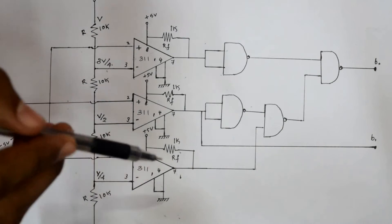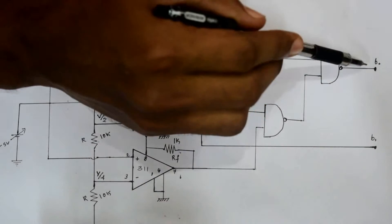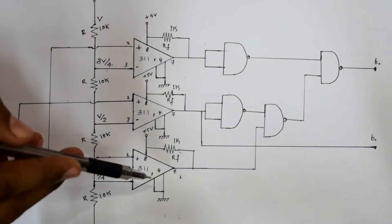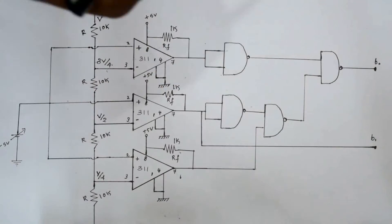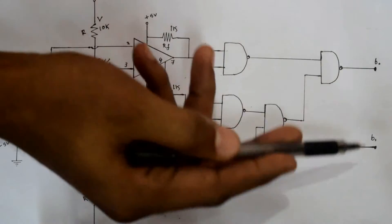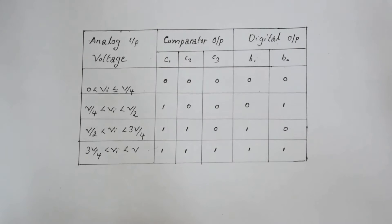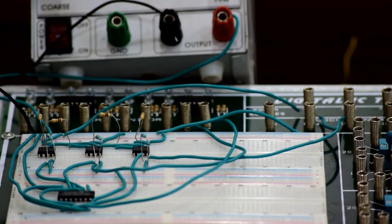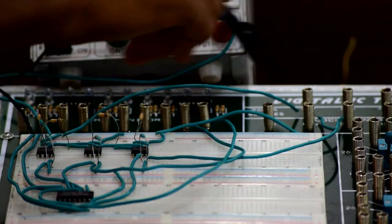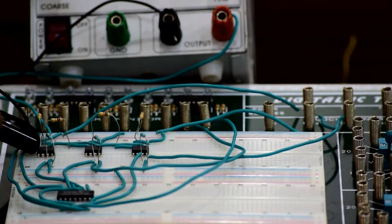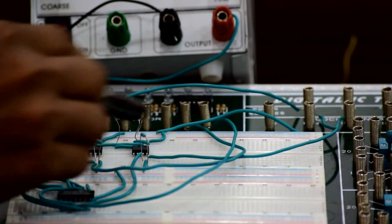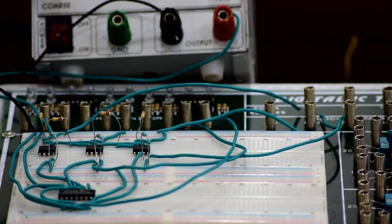The truth table for this experiment shows that the variation in the input can be recorded into digital with the help of this truth table. Now let us move to the components of this circuit. This is the variable DC source, this is the fixed DC source, and these four resistors are the voltage divider resistors.